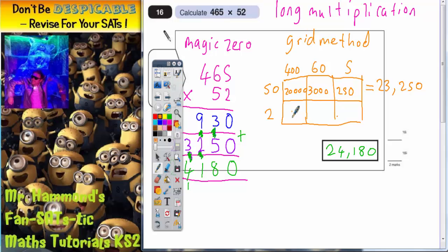Now we need to do a similar thing for the bottom line. So 2 lots of 400 is 800. 2 lots of 60 is 120. 2 lots of 5 is 10. Add all of the bottom line together. So 800 plus 120 is 920. Plus 10 is 930.